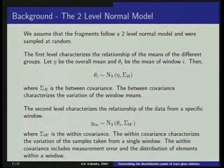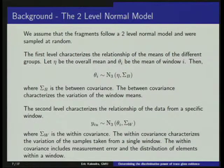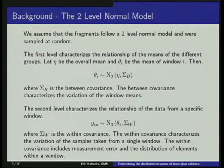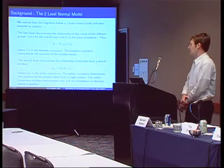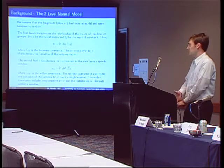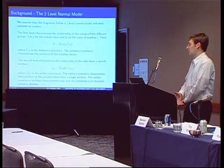The two-level normal model has normal distributions placed on two different pieces. If we're sampling from windows, we assume that all windows in our population have a mean that follows a normal distribution — in statistics we like to view an infinite population and windows are samples from this distribution. Once we fix a window, the second level assumes that the distribution of shards from that window also follows a normal distribution. These are multivariate normals because we have three elements.